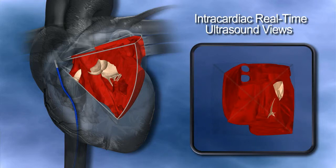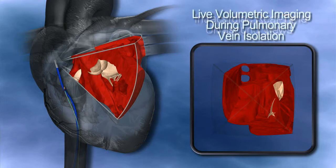The vantage point can be changed — it's sort of like a camera doing a fly-through in the heart. A typical procedure a cardiologist might use this for would be an interventional procedure to treat, for example, atrial fibrillation, which is a common cardiac arrhythmia.